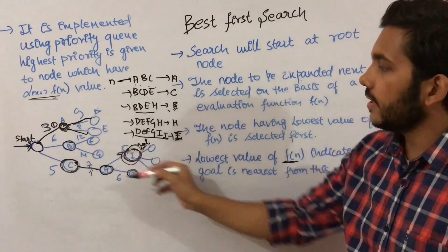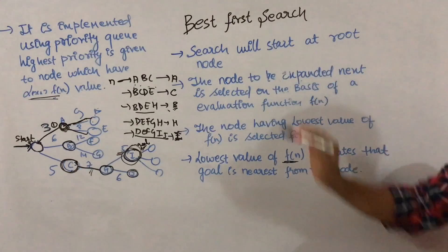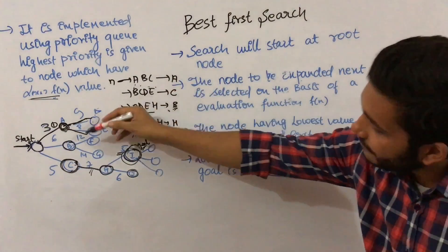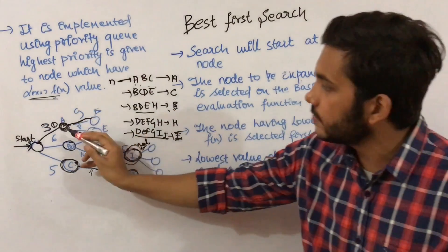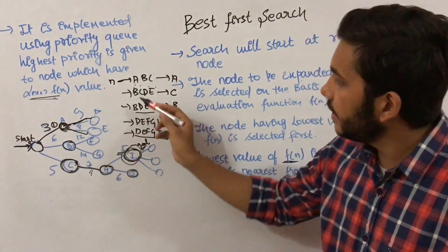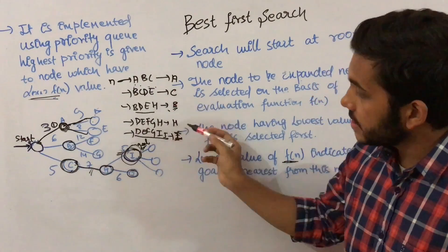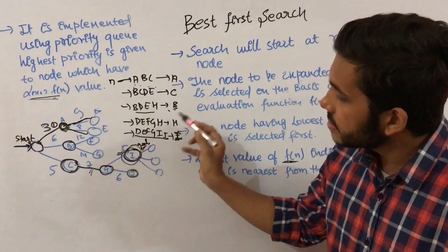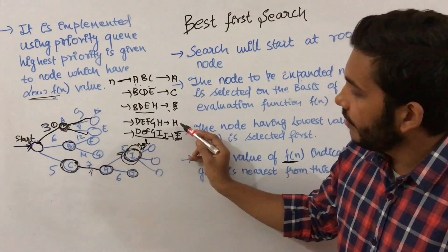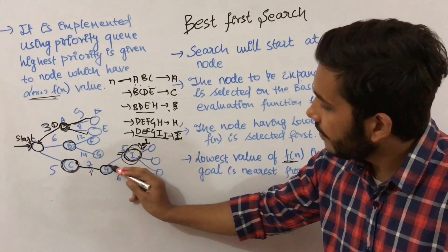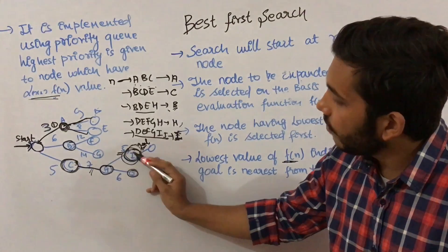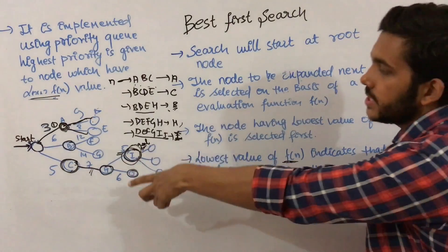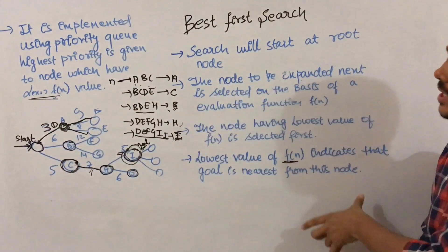So best first search is a search algorithm where at every point the best node is chosen. From the start, 3 was the best; then 5; then 6; then 7 for H; and finally 5 for I, which was the goal node. At each stage, the node with the lowest f(n) is selected, which is how best first search works.